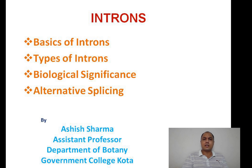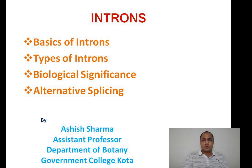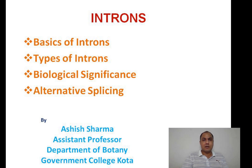We are going to consider the basics of introns, then what are the types of introns discovered till date, and what is the biological significance that has been deciphered till date, because we don't know each and every aspect of anything on earth in a full manner. We continue to strive for such significance. Then after, we will discuss alternative splicing — a phenomenon possible only because of the presence of introns. If there were no introns, there would be no alternative splicing. So one by one we are going to discuss these topics.